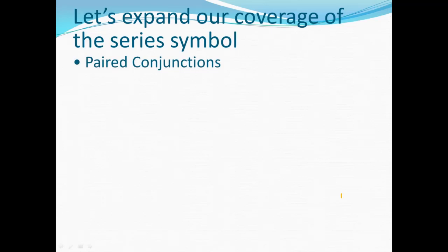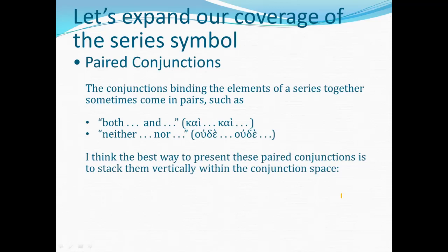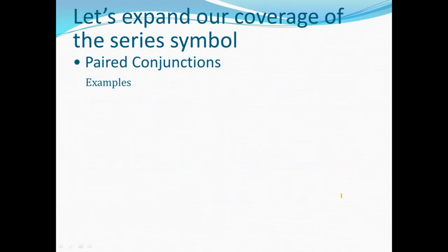On to new material now for part seven. Let's get into expanded coverage of the series symbol. Sometimes the conjunctions binding together the items in a series are working together in a pair. Examples of this kind of construction would be a repeated kai meaning 'both and,' or oude repeated with the idea 'neither nor.' The best way to present these paired conjunctions is to stack them vertically within the conjunction space in that series branch symbol — the conjunction in the central portion of the symbol is simply split into two lines with the first conjunction on the first line and the second on the second line.